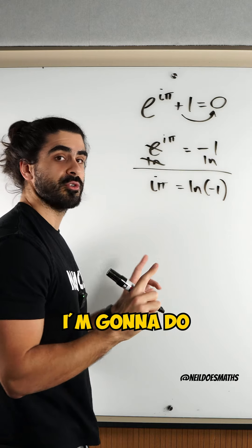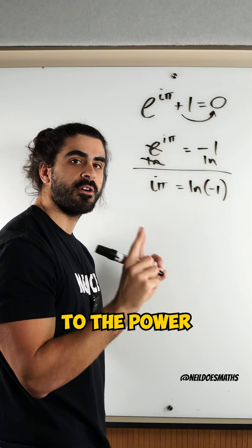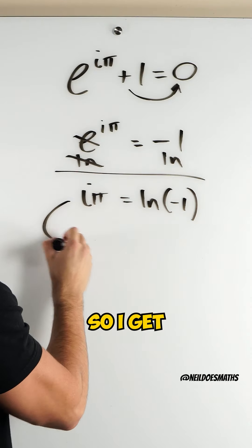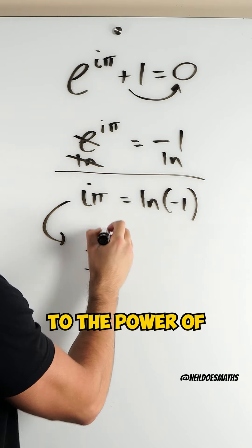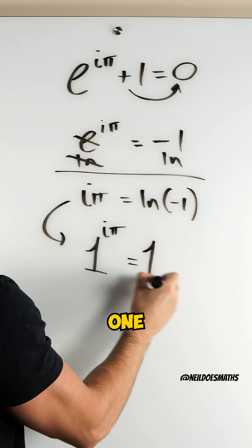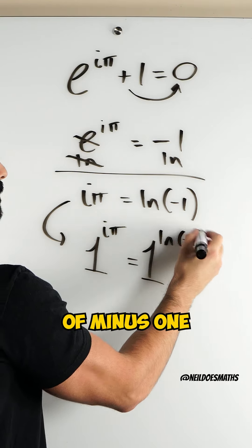The next thing I'm going to do is raise both sides to the power of 1. So I get 1 to the power of i pi equals 1 to the power of ln of minus 1.